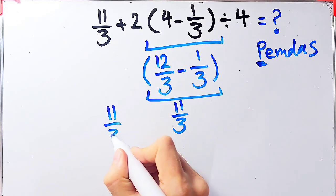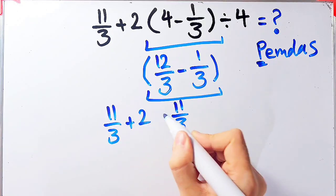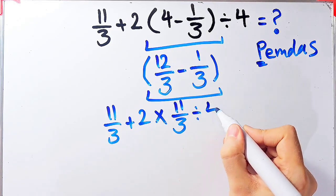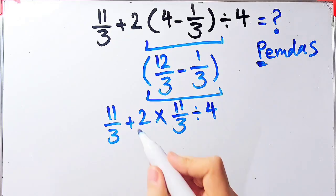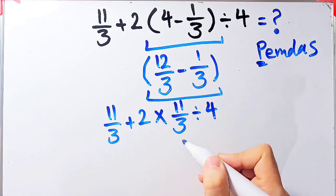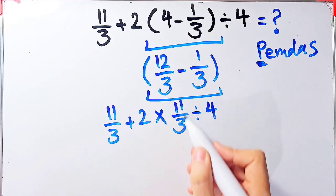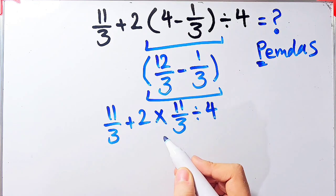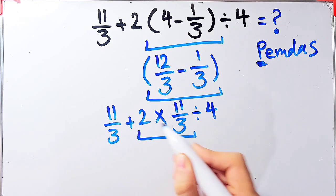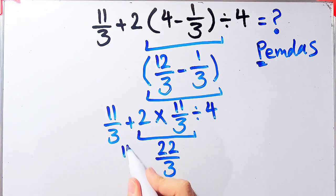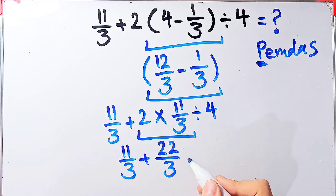Now we have 11 over 3 plus 2 times 11 over 3, divided by 4. We have addition, multiplication, and division. First we simplify the multiplication: 2 times 11 over 3 equals 22 over 3. Now we have 11 over 3 plus 22 over 3, divided by 4.